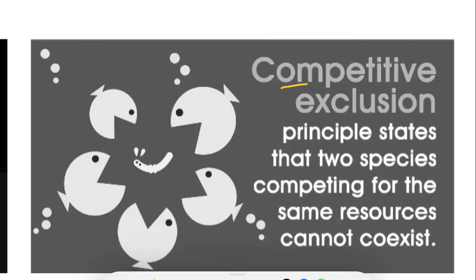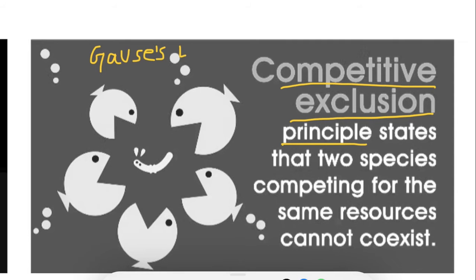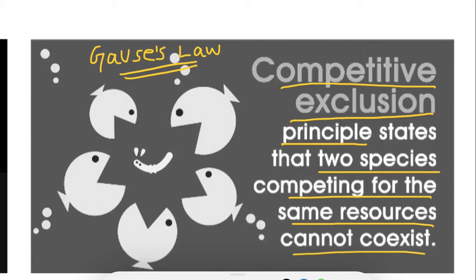This is the competitive exclusion principle, also referred to as Gause's law. Gause's law and the competitive exclusion principle are the same thing: two species competing for the same resources cannot coexist — they cannot live in the same place.